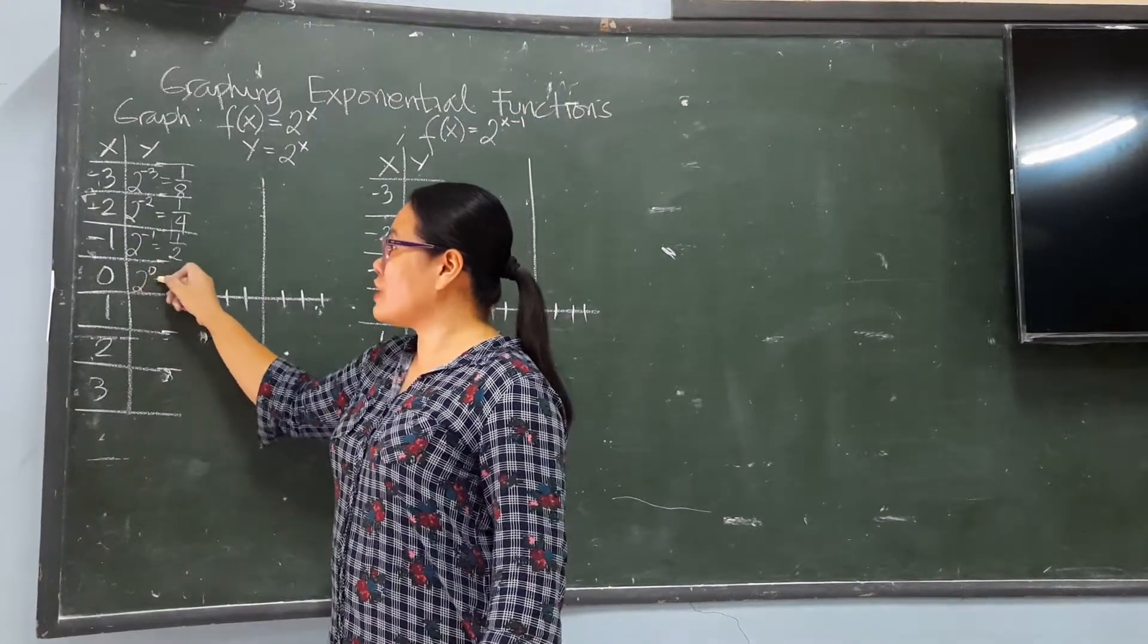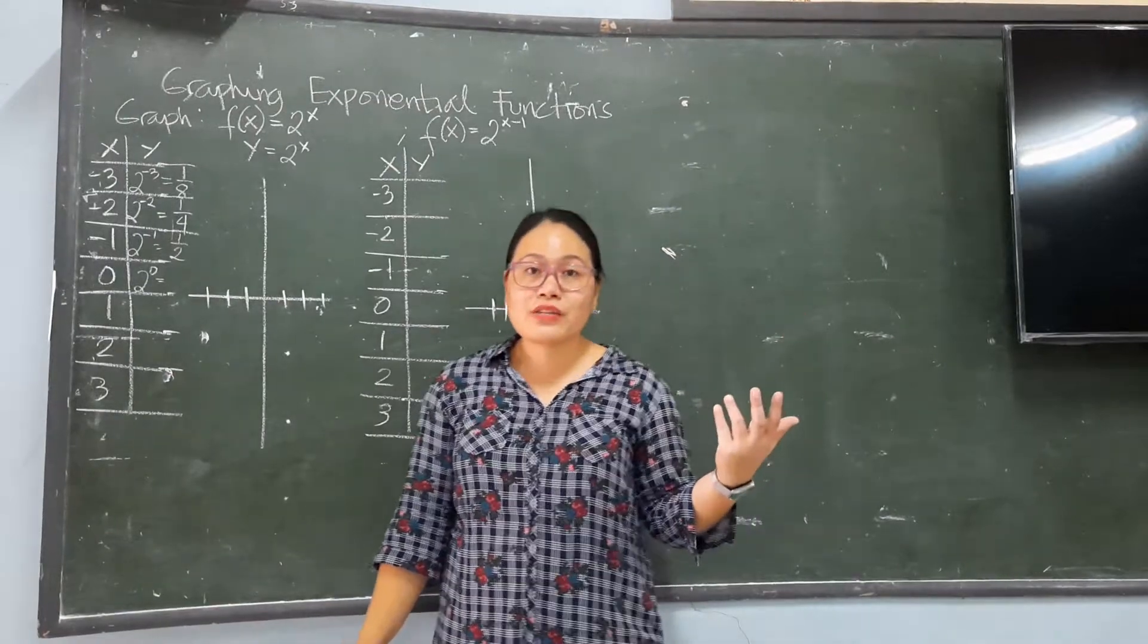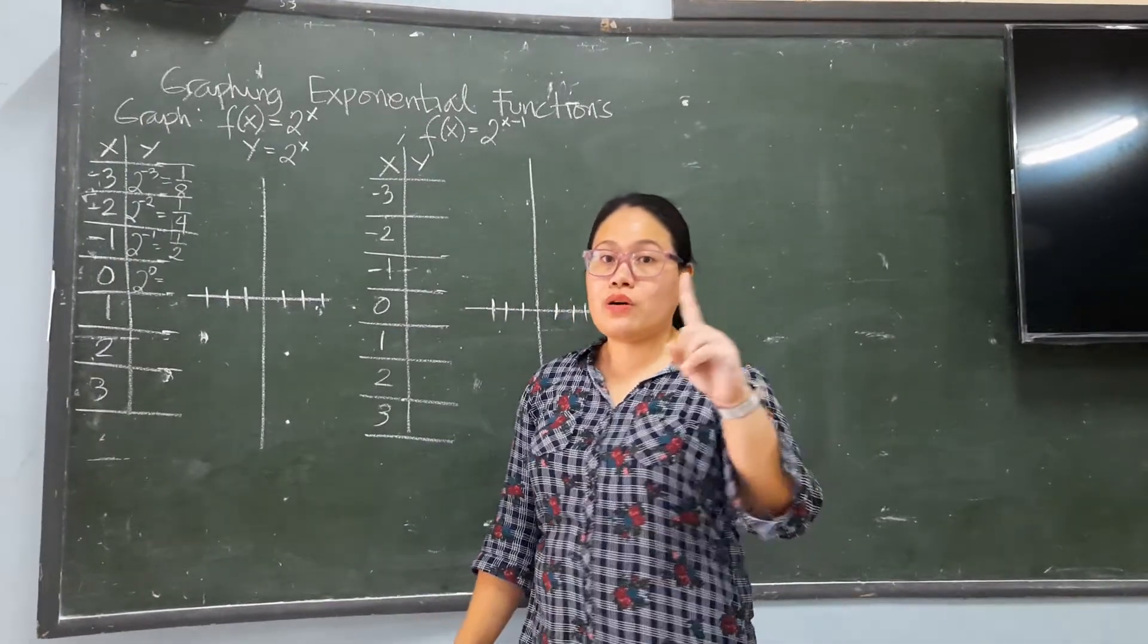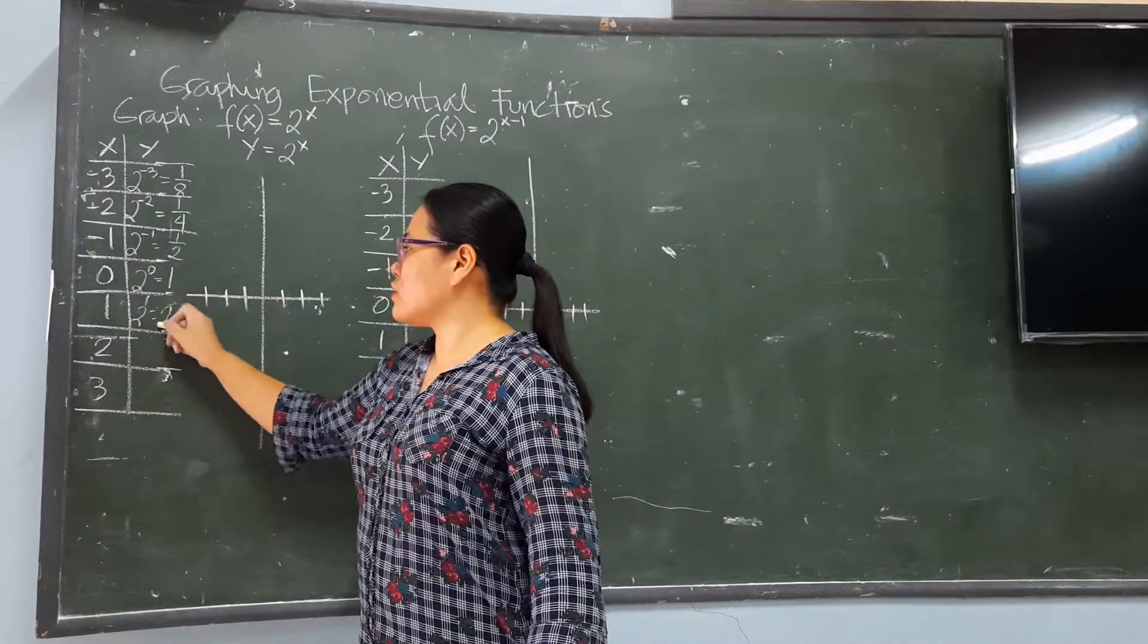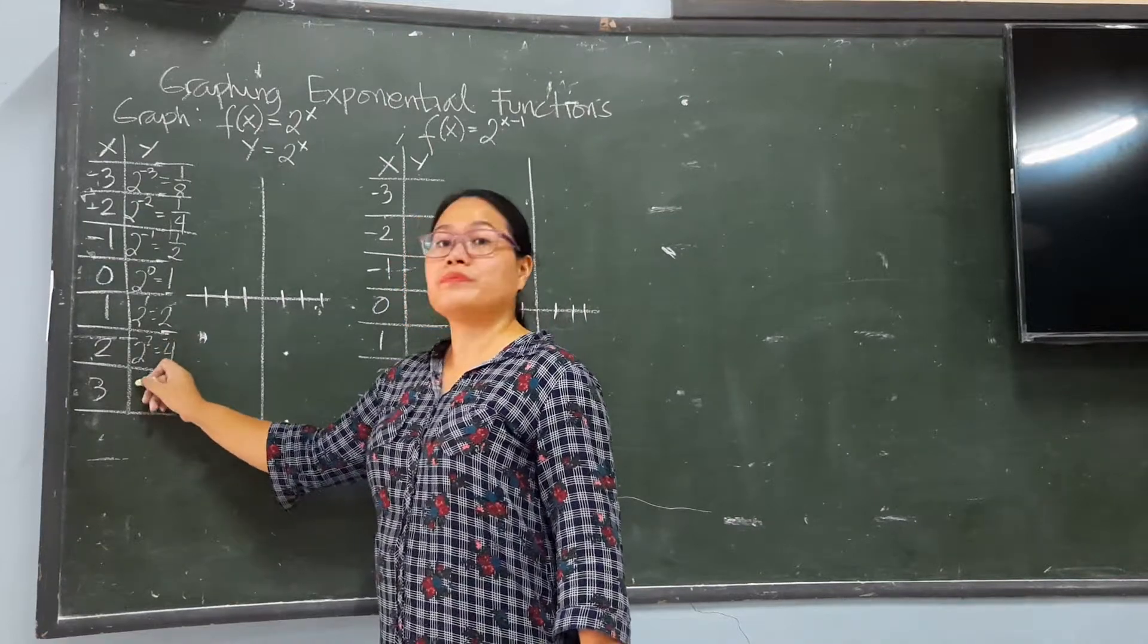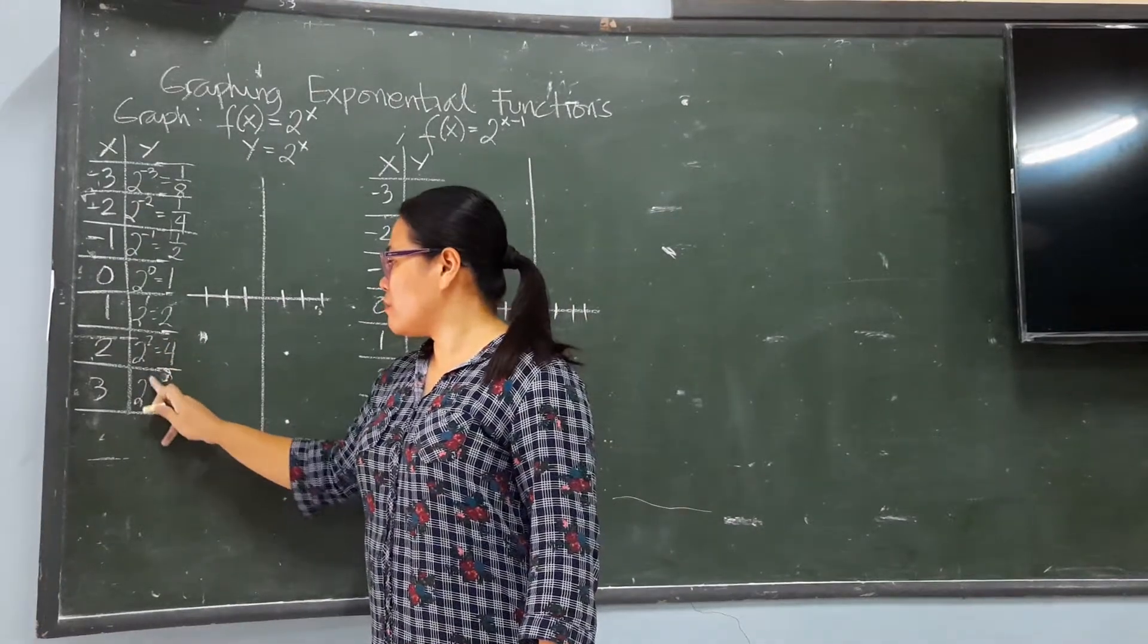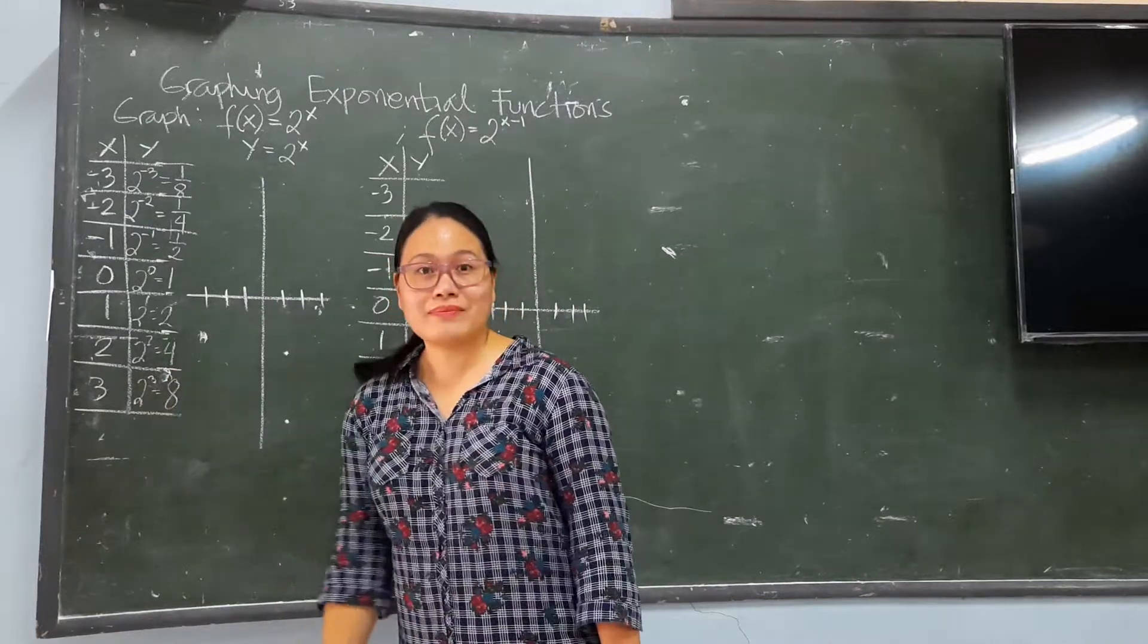2 to the power of 0. Remember, any number raised to the power of 0 is always equal to 1. That's 1. And, 2 to the power of 1, it's 2. 2 squared, that's 4. And, 2 cubed, I'm sorry, 2 cubed, that is 8. Okay? So, we are done.